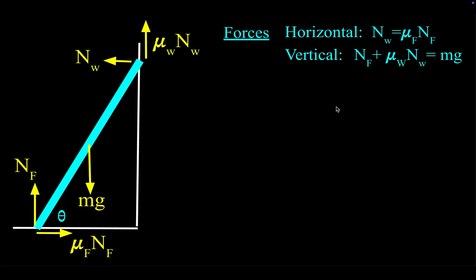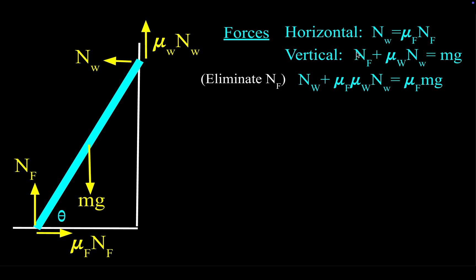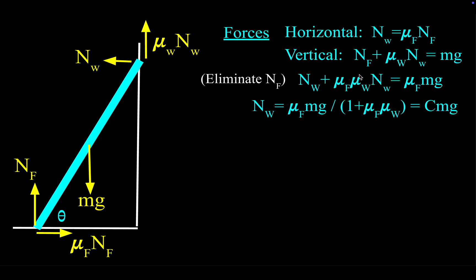What we're going to do is eliminate the normal force from the floor. I'll multiply the vertical equation by mu_F — every term by mu_F. So mu_F times N_F gives N_W, and the other two terms also get multiplied by mu_F. What's nice is N_F is now gone as an unknown. We can solve for the normal force on the wall in terms of MG. Factoring out N_wall and dividing gives N_wall = mu_F · MG / (1 + mu_F · mu_W). To make the algebra less annoying later, I'm just going to call this coefficient of MG a new constant called C.